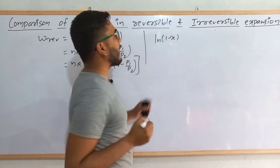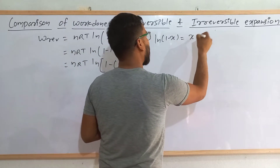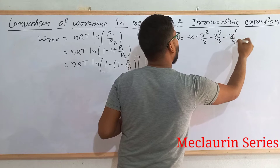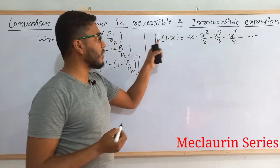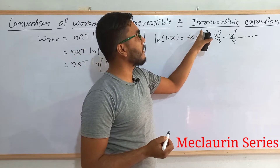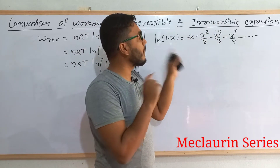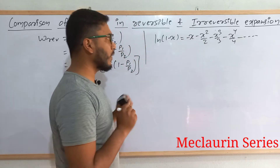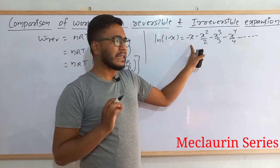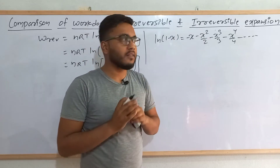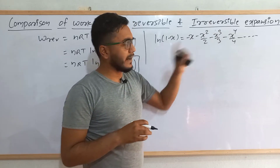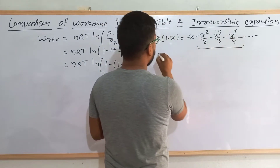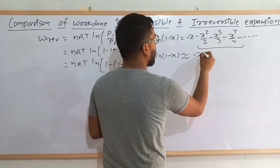If there is a form ln(1 − x), then it can be expanded as −x − x²/2 − x³/3 − x⁴/4 and so on. That means whatever value is being subtracted from 1, we increase its power by 1 in each term, that term is divided by the same number, and all the signs are negative. But if the value of x is very small, then x² will be even smaller, x³ even smaller still, and divided by some number their value becomes negligible — so they can all be neglected. Therefore ln(1 − x) can be written simply as −x.